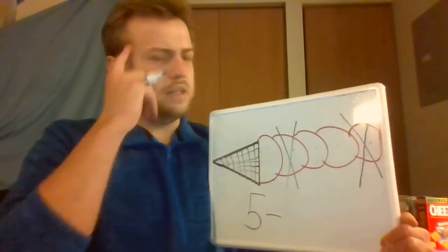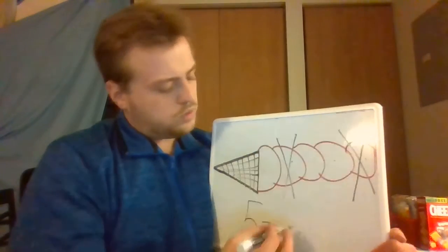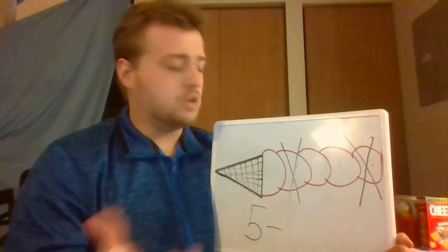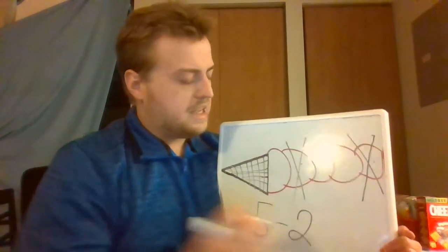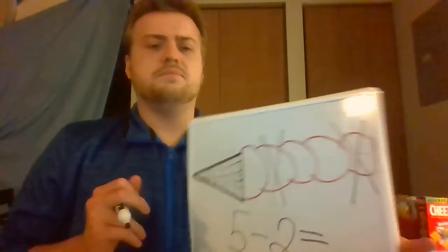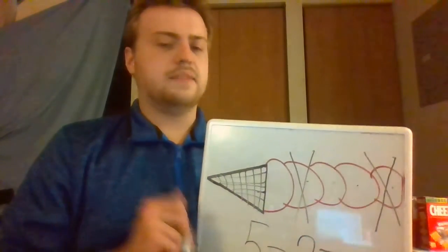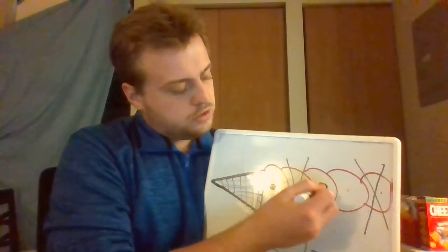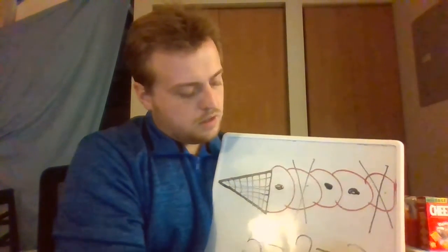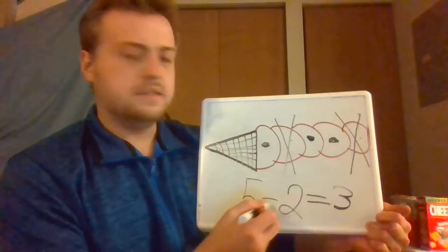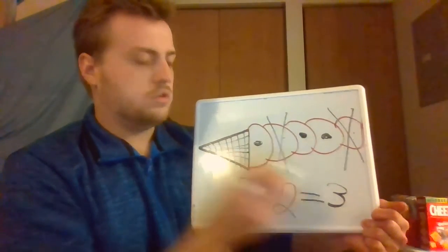So let's count how many I ate. Remember I just said two — one, two. So we are going to do five. Five is the number that I started with, and then I ate two ice cream scoops. So how many ice cream scoops do I have left to eat? Go ahead and count that. I have one, two, three. So this says five minus two equals three.